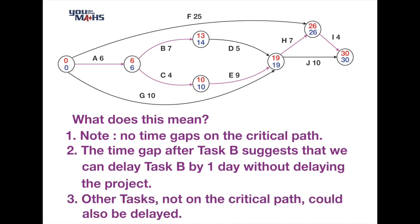We must take care when interpreting the results. Some tasks not on the critical path can also be delayed. Task F feeds into a node showing 26 at both top and bottom, but task F only takes 25 days, so it can be delayed by one day without affecting the minimum completion time for the whole project.